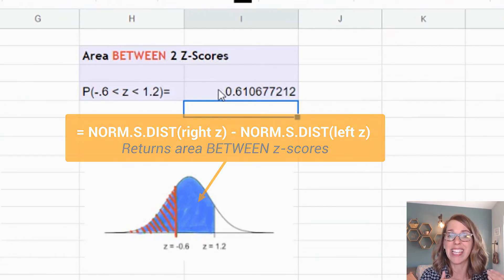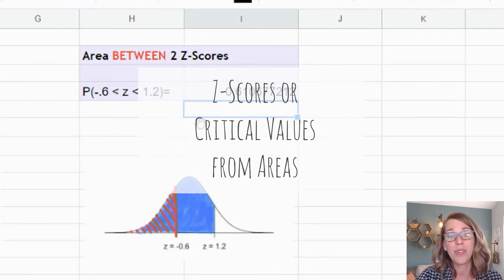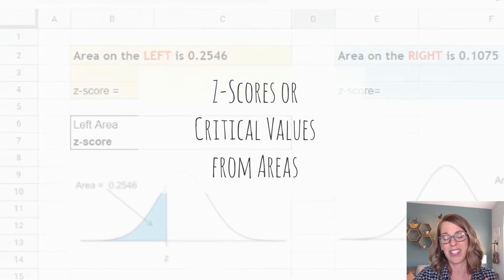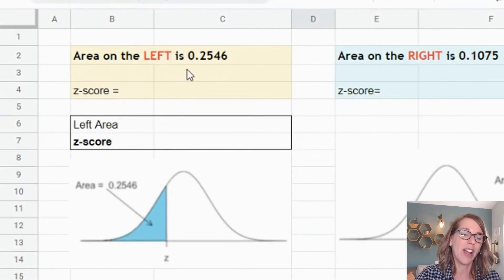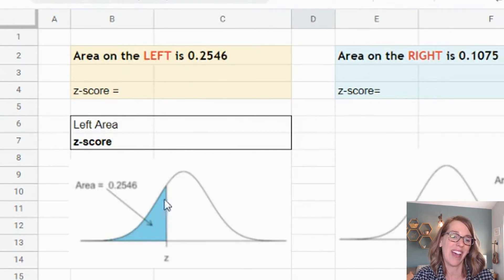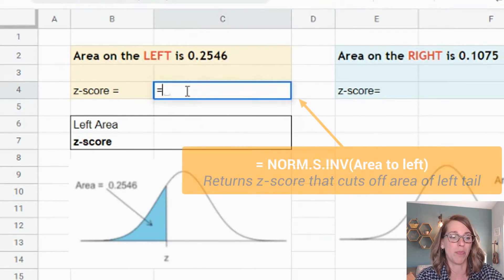Now let's take a look at finding z-scores given areas. We're going to find the corresponding z-scores, a really great way to find critical values if you're working on hypothesis tests or confidence intervals. First of all, we are given an area to the left. The area I'm pointing to here in this left tail is 0.2546.